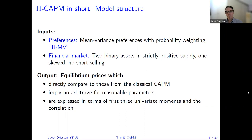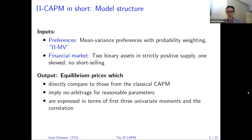The financial market is also kept very simple. In the presentation today, I will focus on the case where we have two assets and the assets are binary — they have two potential outcomes. We also assume they have positive supply and there is no short selling. In the paper, we extend this setting in different dimensions: the model allows for many assets and many potential payoffs. But to keep it simple, I will focus on the two-asset, two-state case, and all the interesting effects can be seen in that setup.